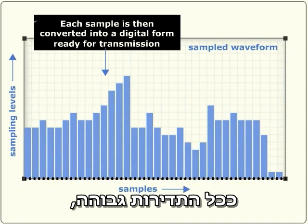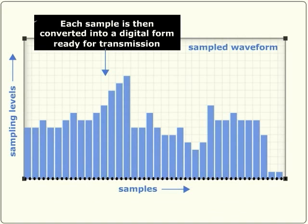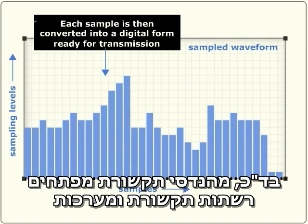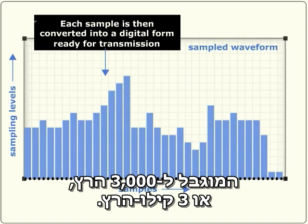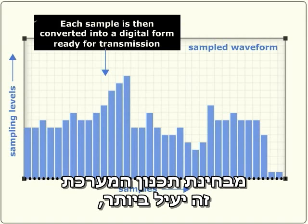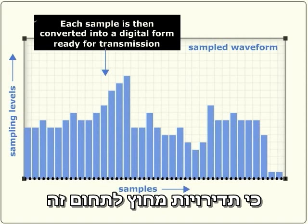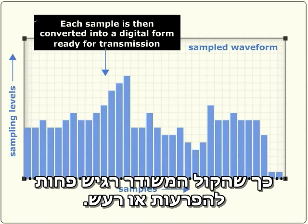The higher the frequency, the more wave cycles are completed from start point to end point. Telecom engineers usually develop networks and systems to transmit voice calls using a bandwidth limited to 3,000 hertz or 3 kilohertz. From the point of view of systems design, this is very efficient because frequencies outside this range can easily be blocked or filtered, so the voice signals will be less prone to interference or noise.